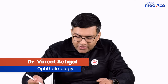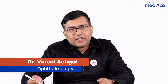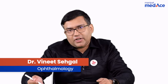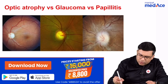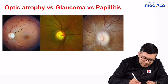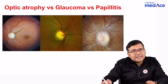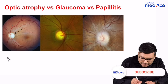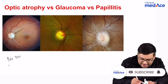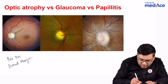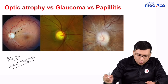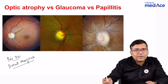Hello friends. In this video we would be talking about three very important optic nerve head disorders. First is optic atrophy. As you can see in this picture, there is a pale disc with distinct margins. This is a patient who is having optic atrophy.